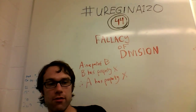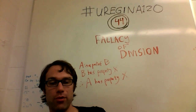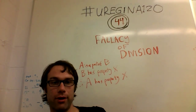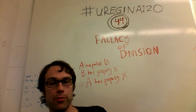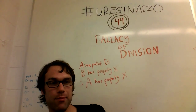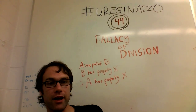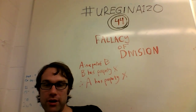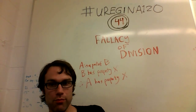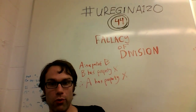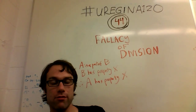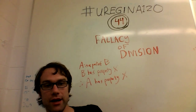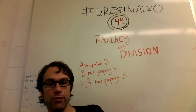This is probably best taught with examples to make clear what is going wrong. A Boeing 747 can fly unaided across the ocean. A Boeing 747 has jet engines — that's part of what makes a Boeing 747, the jet engines. Therefore, one of its jet engines can fly unaided across the ocean.